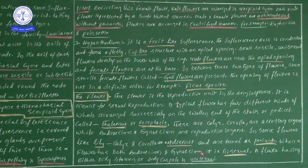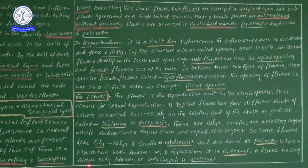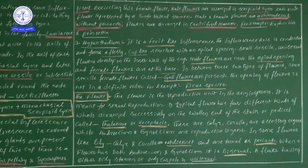When a flower has both androecium and gynoecium — both the male and female reproductive systems — it is called bisexual. If a flower has only stamens or only carpels, it is called a unisexual flower. This is an introduction to the flower; there is still a lot more information to be discussed on this topic.